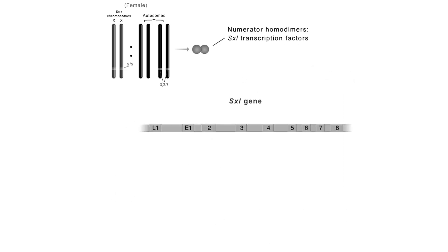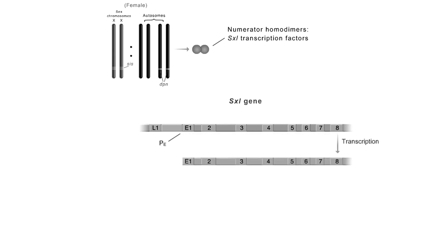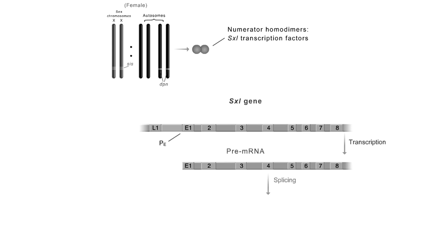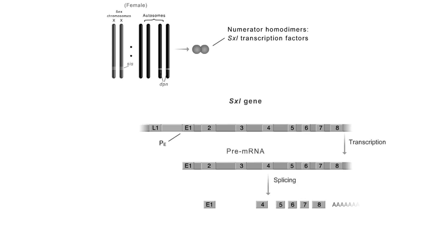Early in embryogenesis in female Drosophila, the sisterless homodimers activate transcription of the SXL gene from the early promoter, PE. The pre-mRNA transcribed from the early promoter has 8 exons, but exons 2 and 3 are skipped to produce the mature mRNA consisting of exons 1, 4, 5, 6, 7, and 8. Translation of this mRNA produces the sex lethal, or SXL, early protein in female embryos.